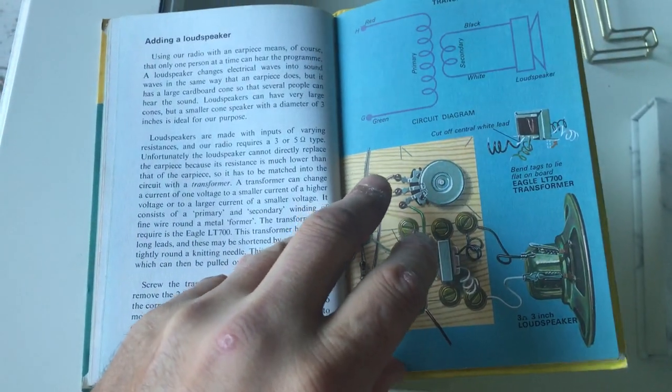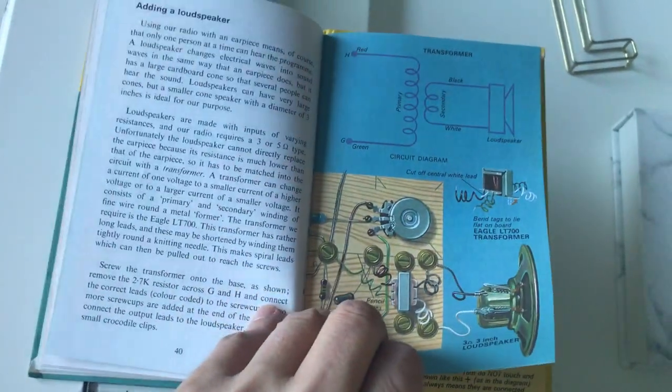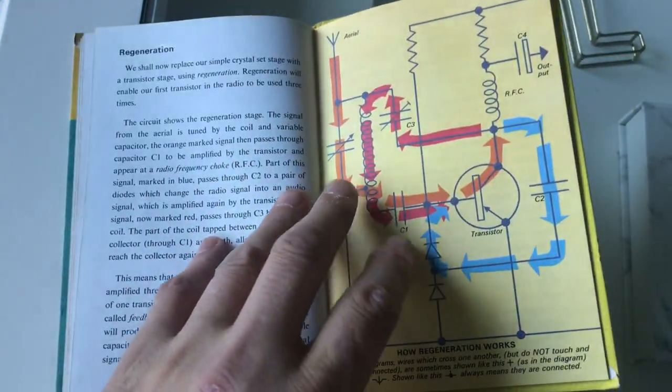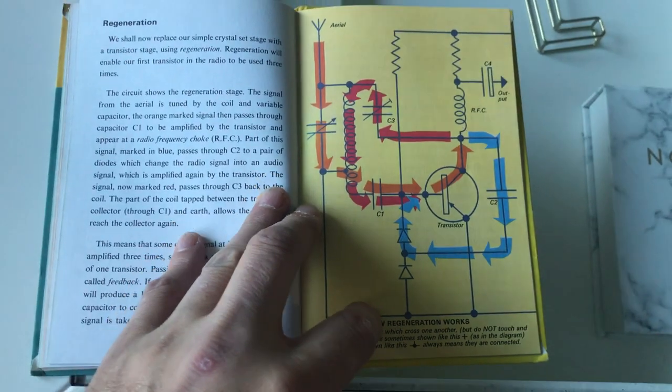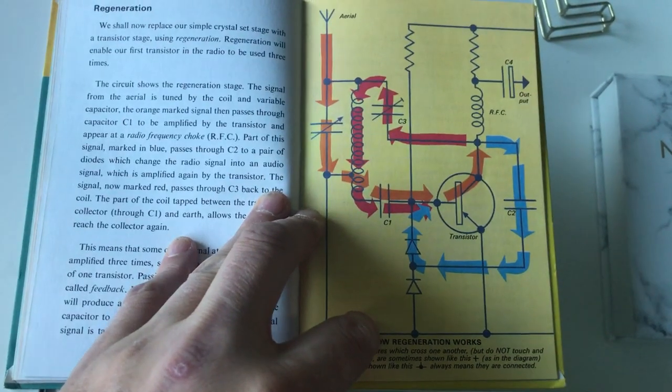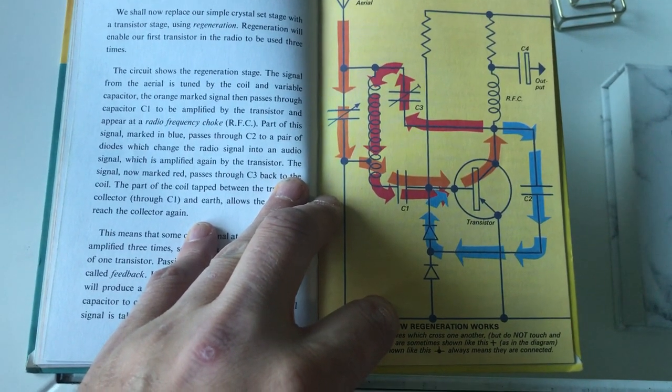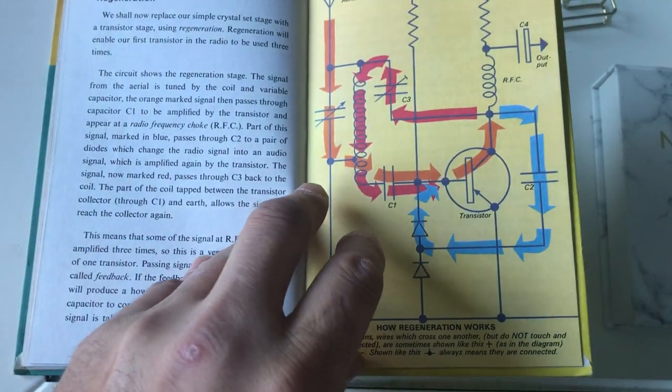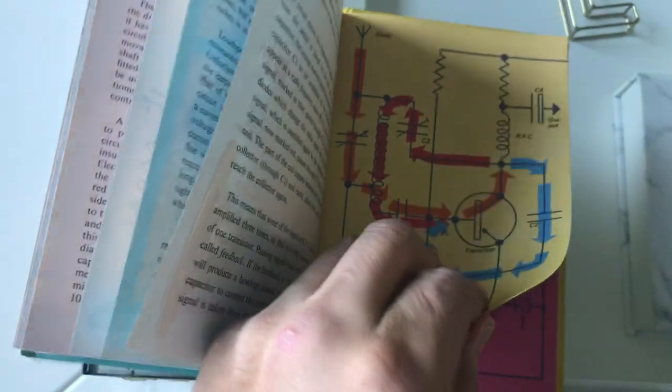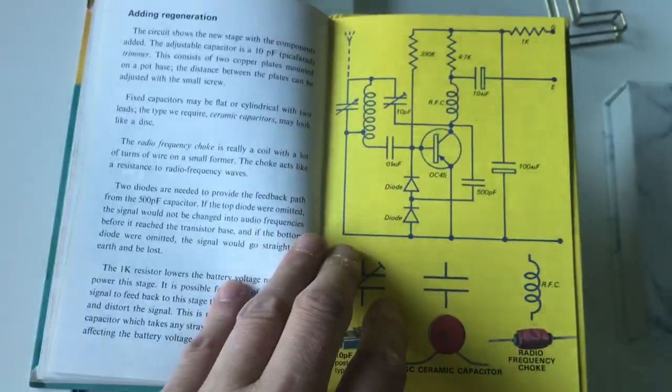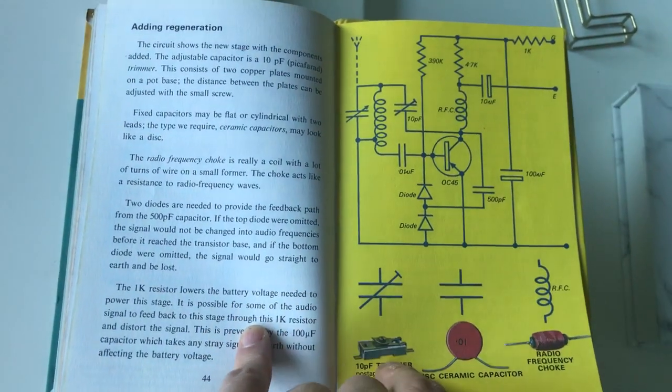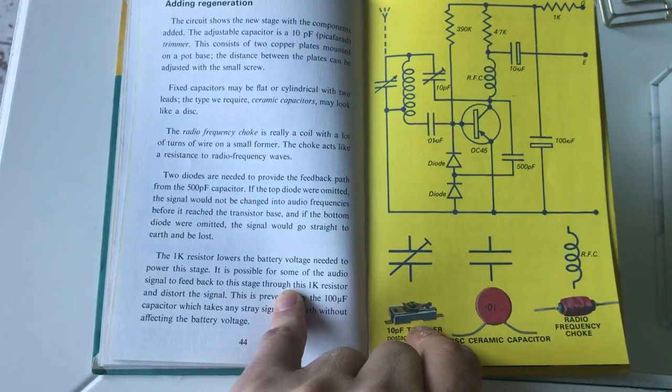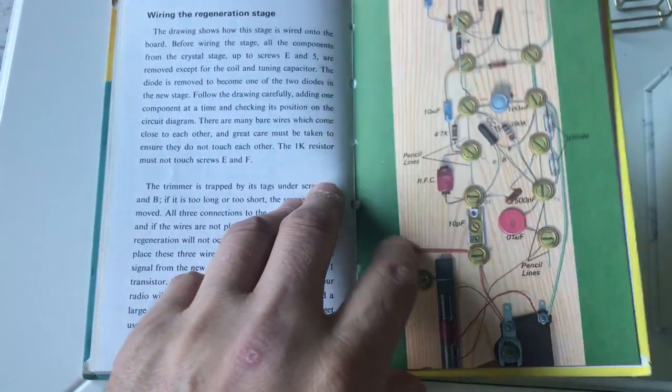And then adding a loudspeaker as well. And then finally regeneration, where the simple crystal stage is replaced with a transistor stage and an explanation as to how that works. And then adding regeneration of circuit and then wiring.